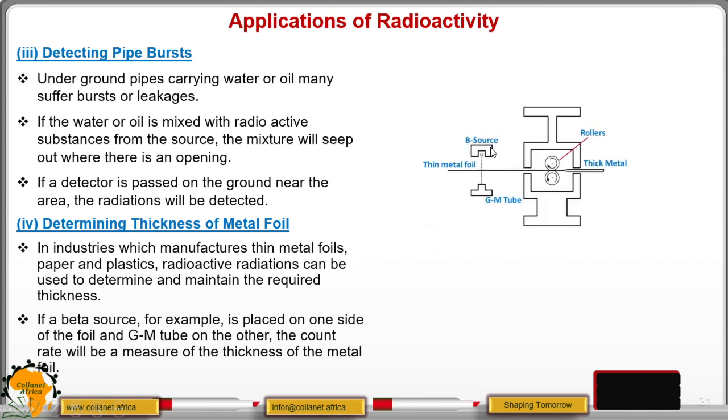We have it in the diagram here. We have the beta source that is coming from this side, then we have the GM tube. The source will be emitted here then they will pass through the metal foil. So the count that is given on the GM tube will give us the thickness of that particular metal foil. We have the thick metal here that is passing, then we have the rollers that are squeezing or ensuring that they are reducing the thickness. The number of counts in the GM tube will help us to maintain the thickness of that metal foil. The thickness gauge can be adapted for automatic control of the manufacturing process.